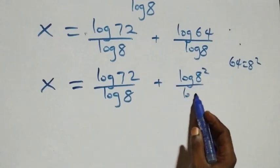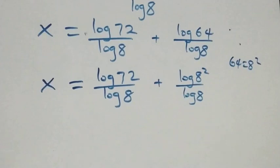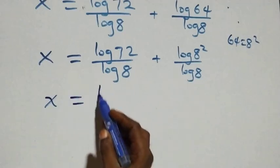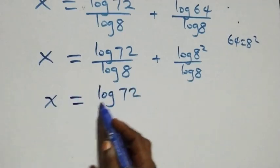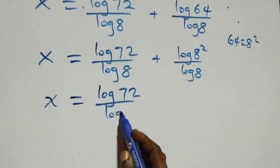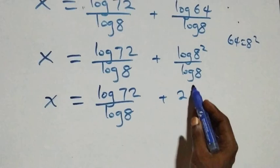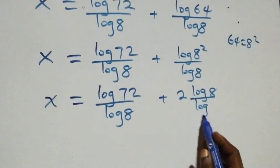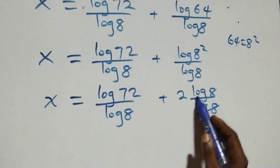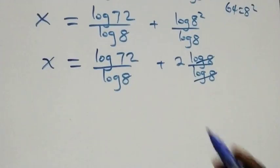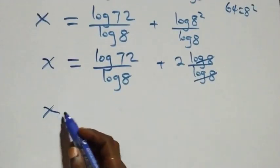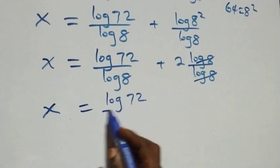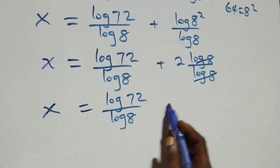Applying the power law of logarithms, the 2 comes down: x equals log 72 over log 8 plus 2 log 8 over log 8. The log 8 terms cancel, leaving 2, so we have x equals log 72 over log 8 plus 2.